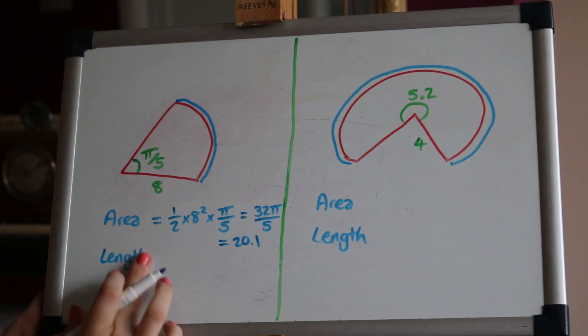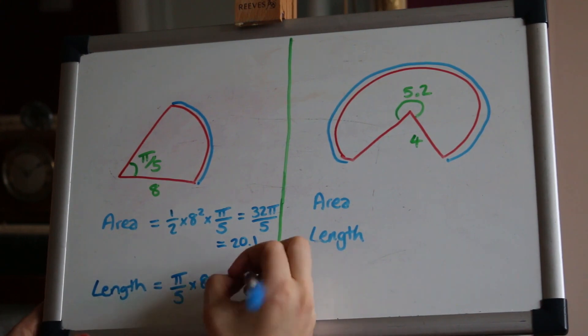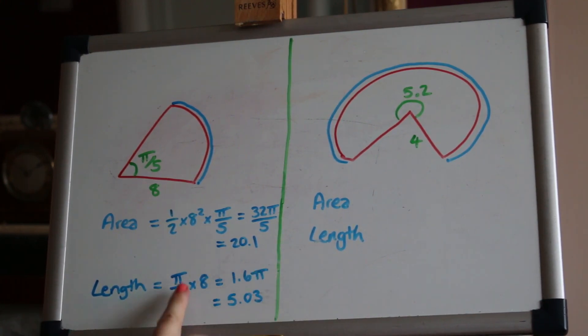Let's do the arc length now. This one's super easy, just multiply the angle by the radius which gives you 1.6π or if you're wanting to convert to a decimal 5.83 centimeters or whatever length you're using.